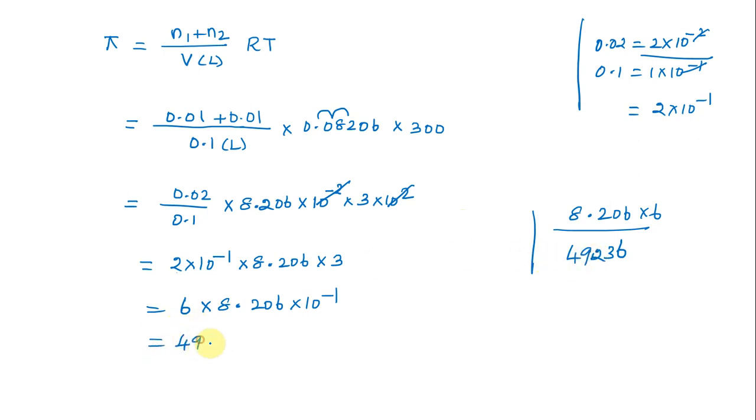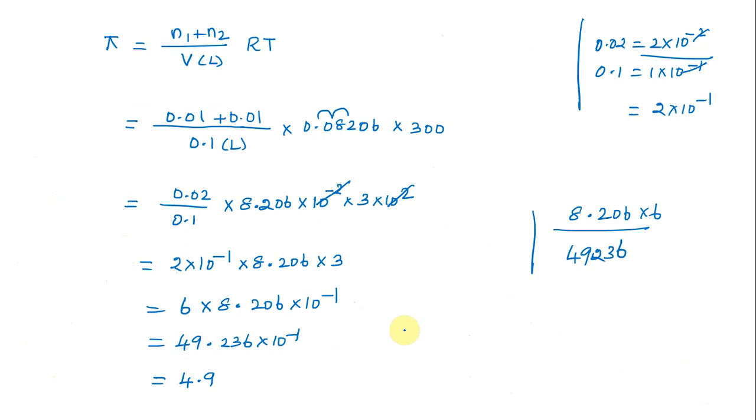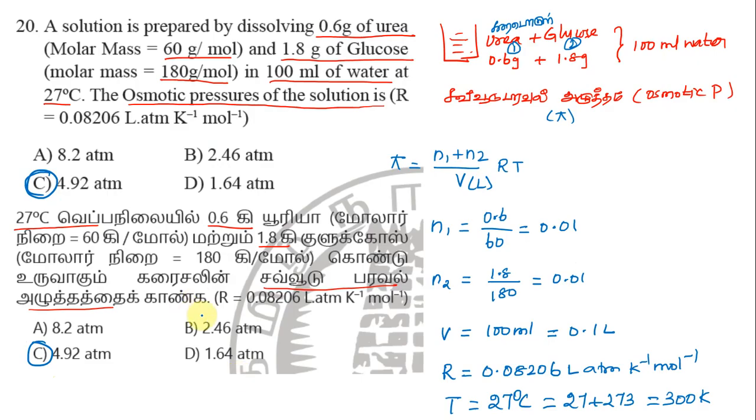49.236 times 10 power minus 1 equals 4.9236. So option C, 4.92 atmospheres, is the correct answer. 4.9236 is the correct answer, option C is the correct answer. Thanks for watching this video.